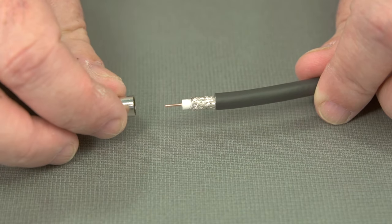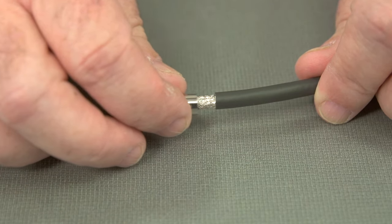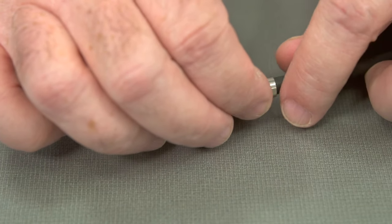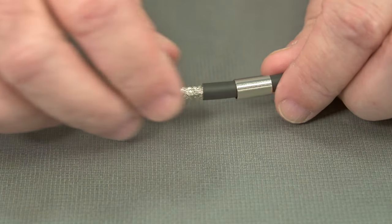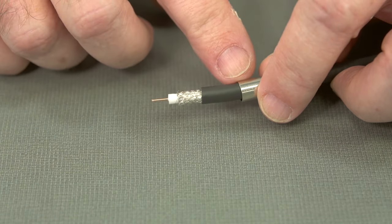So now that we have our cable stripped, the first step is to put our ferrule on. It's in place.